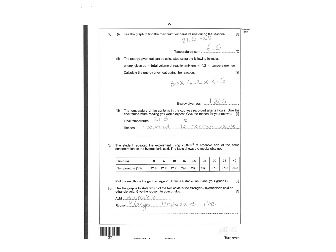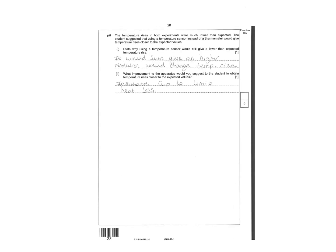Plot and label graph B. Then it's going to be hydrochloric because there's larger temperature rise. State whether using the temperature sensor would still give a lower than expected temperature rise - it would just give a higher resolution, wouldn't change the temperature rise. How could you change your expected values - insulate the cup to limit heat loss.